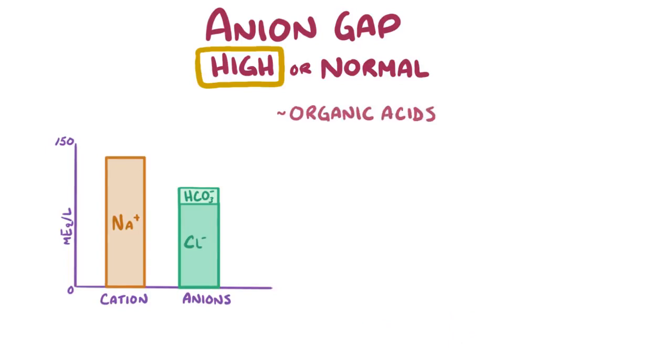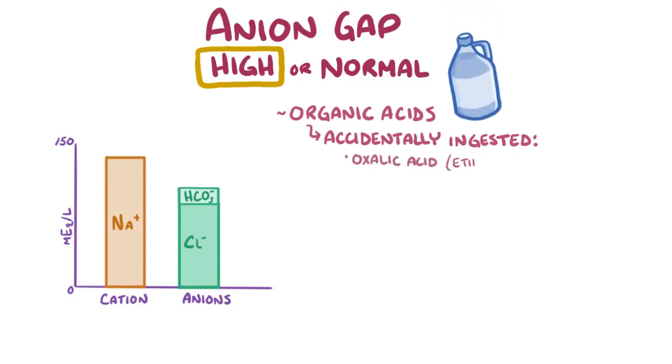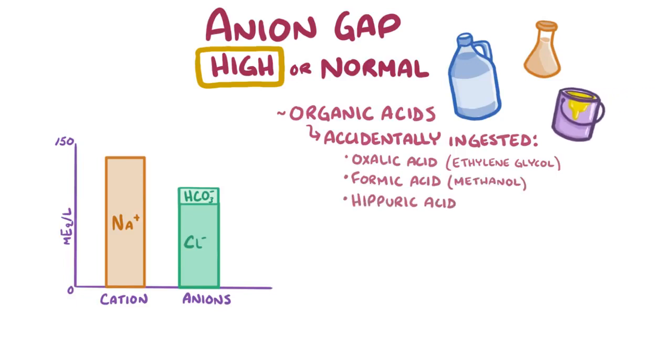In other cases, organic acids don't come from inside our bodies at all, but instead they're accidentally ingested. These include oxalic acid, which can build up after an accidental ingestion of ethylene glycol, which is a common antifreeze, as well as formic acid, which is a metabolite of methanol, which is a highly toxic alcohol, or hippuric acid, which comes from toluene, which is found in paint and glue.